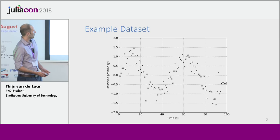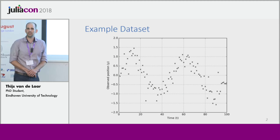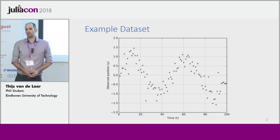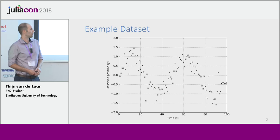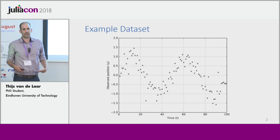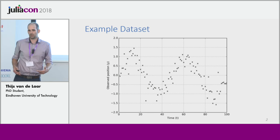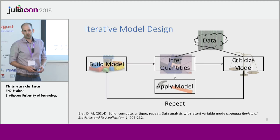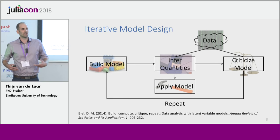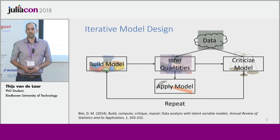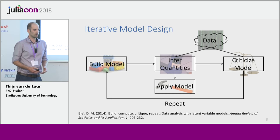I want to talk you through my story by means of a little example. Suppose that we want to develop some kind of a navigation app and we might receive some data that looks like these, which are noisy measurements of a moving car. On the horizontal axis we have the time and on the vertical axis we have the observed position. What we're interested in is to infer the actual position of this car.